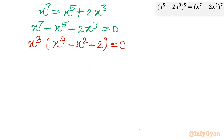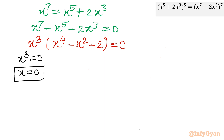This is a convenient equation of the form f · g = 0. That means x³ = 0, which gives x = 0. This is our very first solution.